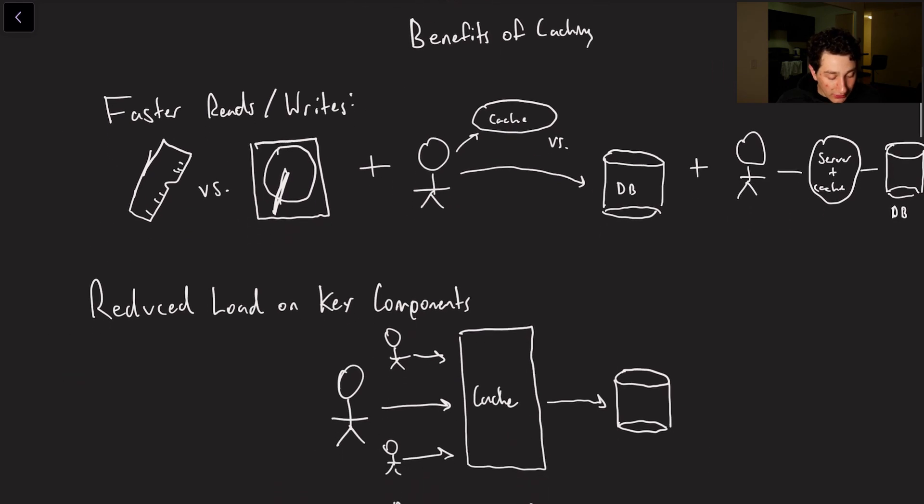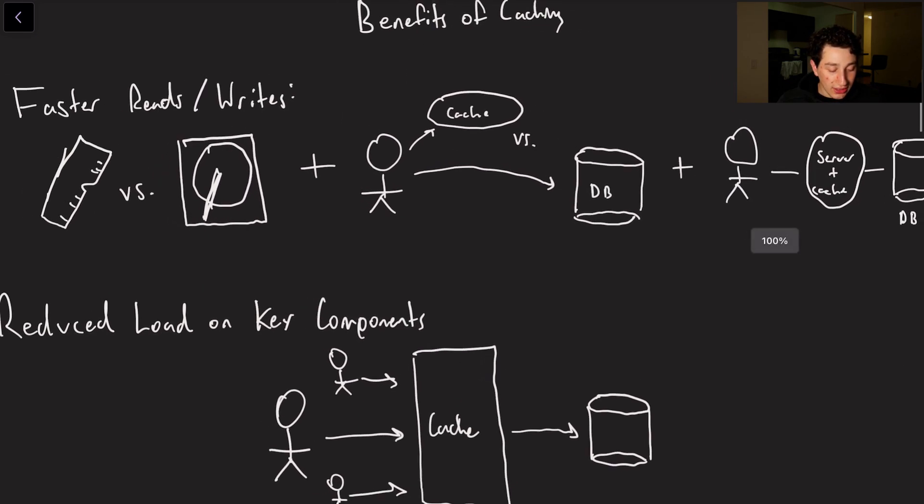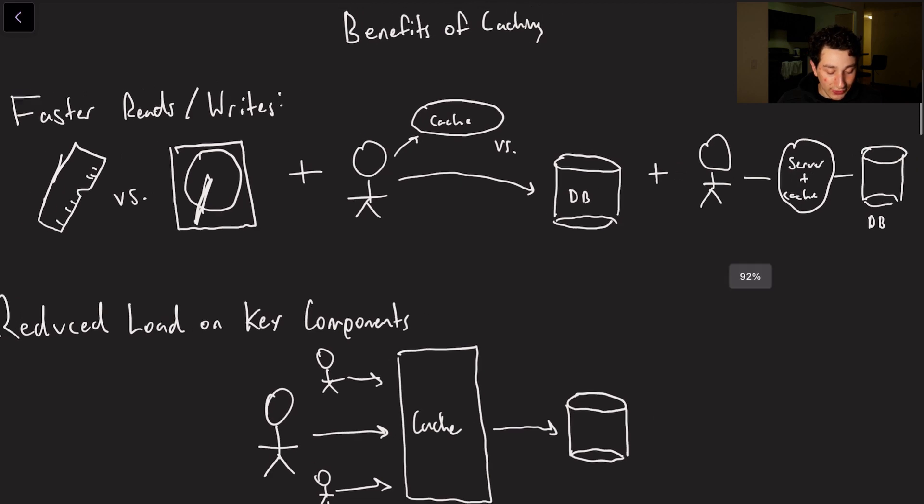So let's go talk about some actual benefits of caching in distributed systems. So number one is that typically your reads and writes should be faster when using a cache. The reason being that you're probably going to be using a faster form of storage. So in this case we've got memory which we'll probably be using as opposed to disk.